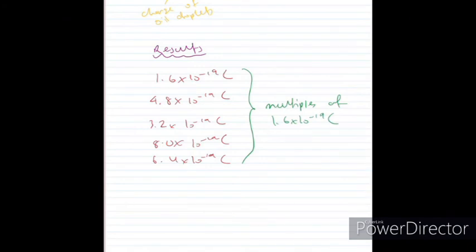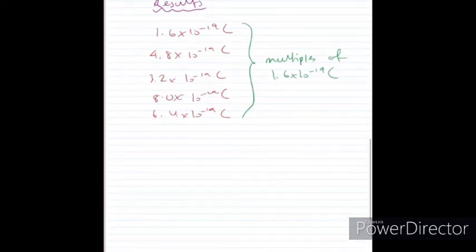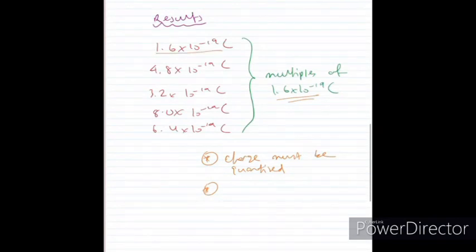Millikan looks at this and thinks that is way too big of a coincidence to happen. And instead, he derives the following conclusions. Firstly, charge must be quantized or divided into packets, and each packet having a charge of 1.6 times 10 to the power of negative 19 Coulombs. He looks at the lowest value we can obtain, which is that 1.6. And he says that the elemental charge as a result of that, or the lowest possible charge, must be 1.6 times 10 to the power of negative 19 Coulombs.